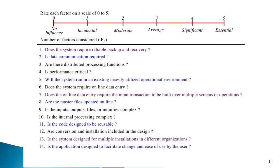For example, the first question is: 'Does the system require reliable backup and recovery?' Suppose the answer is moderate, so F1 equals 2. The next question is: 'Is data communication required?' Suppose the answer is average, so F2 equals 3. In this way, the response to each question is counted on a scale of 0 to 5.